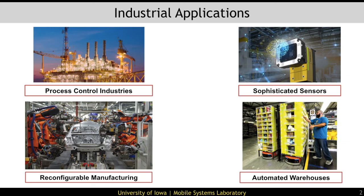With the emergence of Industry 4.0, the performance requirements of wireless networks used in industrial applications have steadily increased. Wireless networks were first successfully used in process control industries, where sensors and actuators operate at low data rates and have mostly fixed workloads. The next frontier for wireless control is advanced manufacturing applications such as reconfigurable manufacturing or automated warehouses. These new applications are significantly more demanding, with sophisticated devices such as cameras and microphones that generate large amounts of data, which must be delivered reliably with very low latency to maintain control stability. Moreover, these applications can be highly dynamic, requiring frequent network reconfiguration.